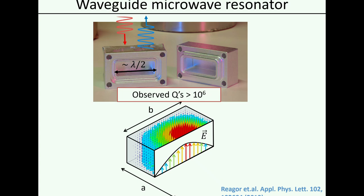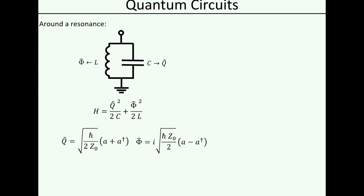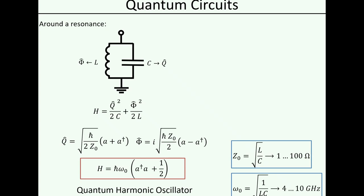Pretty much every microwave resonator around the resonance can be described as essentially a parallel combination of an inductor and a capacitance. It turns out I have an associated charge and flux, and I can quantize those — I can write down a Hamiltonian by just adding up the charging energy and the energy stored in the inductance. Charge and flux are conjugate variables, so I am allowed to write down ladder operators just as I would have done for a regular harmonic oscillator, and what I get out is just a regular quantum harmonic oscillator Hamiltonian where instead of a mass and a spring constant I have now my inductance and capacitance.